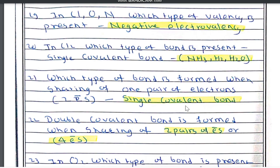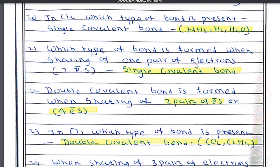Question number 20: in Cl2, which type of bond is present? A single covalent bond is present in the chlorine molecule. Other examples of single covalent bonds are NH3, H2, and H2O. A single covalent bond is formed when there is sharing of one pair of electrons, that means two electrons.